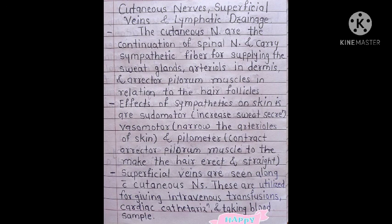Here are some important points to remember about cutaneous nerves. The cutaneous nerves are the continuation of the spinal nerve and they carry sympathetic fibers for supplying the sweat glands, arterioles in the dermis, and the erector pili muscles in relation to the hair follicles. The effects of the sympathetics on the skin are sudomotor (increased sweat secretion), vasomotor (narrowing of arterioles), and pilomotor (contraction of erector pili muscles to make the hair erect).